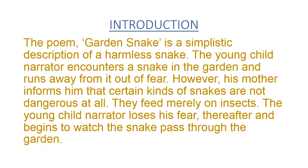So basically, he finds a snake and is very afraid and runs away in fear. Then later, his mother informs him that certain kinds of snakes are not dangerous. There are some snakes like cobra which are very big and dangerous. But there are certain kinds of snakes which are not at all dangerous — they feed merely on insects, they eat only insects. The young child narrator loses his fear and now he is not afraid of snakes anymore. Thereafter, he enjoys seeing the snake passing through the garden.